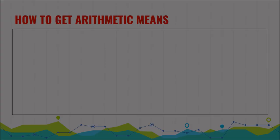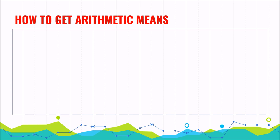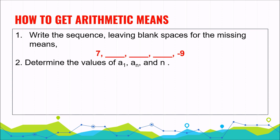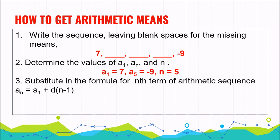How to find the arithmetic means of an arithmetic sequence: first, write the sequence leaving blank spaces for the missing means. For example, insert three arithmetic means between 7 and negative 9 — so we have 7, blank, blank, blank, and negative 9. Next, determine the values of a sub 1, a sub n, and n. Obviously a sub 1 is 7, a sub 5 is negative 9, and n is 5. Substitute into the formula for the nth term.